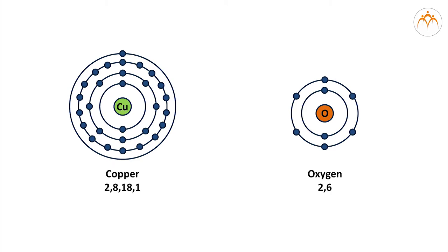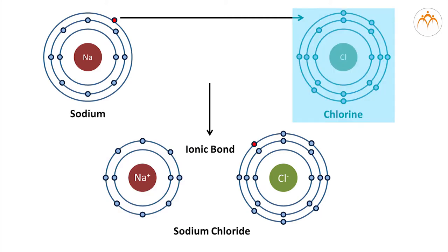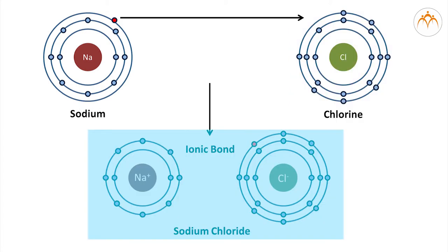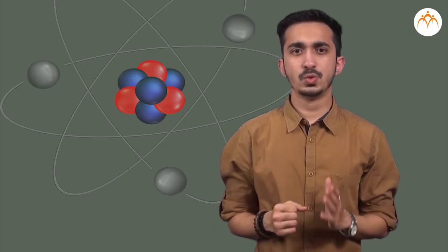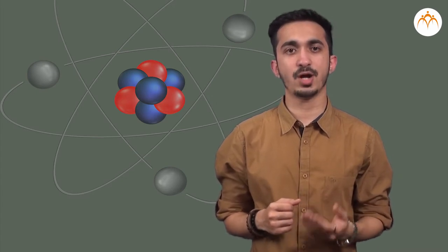Metals do this by losing electrons while nonmetals do this by gaining electrons. Na gives Na plus plus electron. Cl plus electron gives Cl minus. Na plus Cl gives NaCl. Sodium atom loses one electron and forms a positive ion, that is a cation. Chlorine atom gains one electron and forms a negative ion, that is an anion.